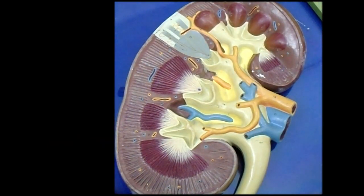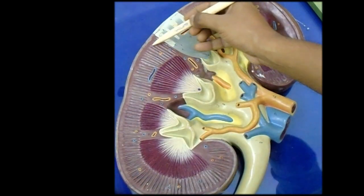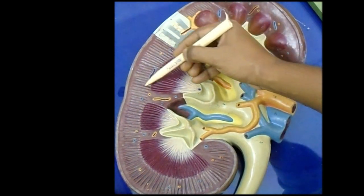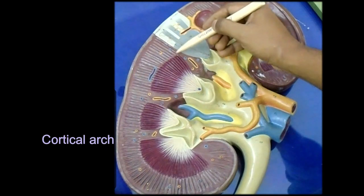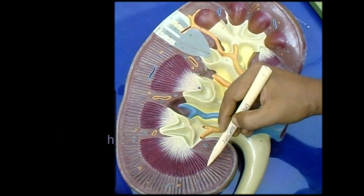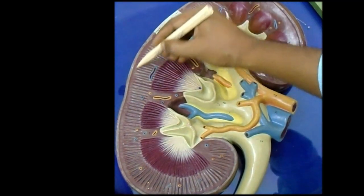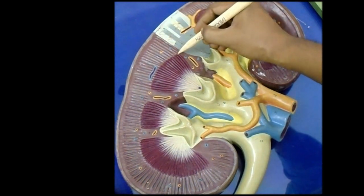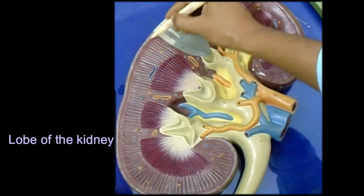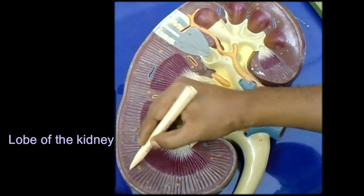The area of the cortex that is capped over the base of the renal pyramid is termed the cortical arch. One renal pyramid and its adjacent cortical arch together form the lobe of the kidney.